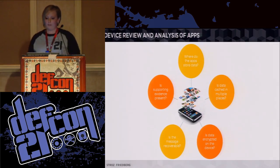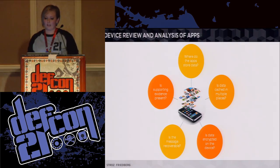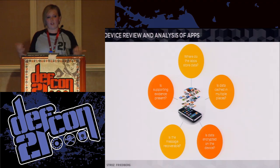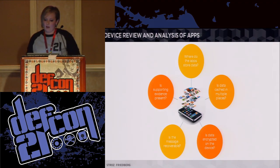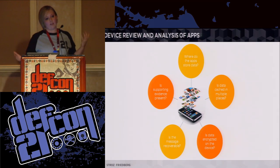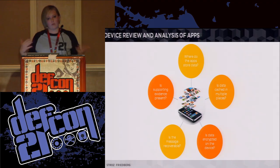The questions we want to ask: Where are the app store data? We'll talk about the user plist on an iPhone. Is data cached in multiple places? We're going to talk about metadata and then the data itself on Android. Is data encrypted? We'll talk about the differences between apps like Wickr and Snapchat and their intentions. Are the messages recoverable? We're going to show you that in some cases, yes, they are. Is there supporting evidence present? We'll talk about empty files that show there was an image present at one point, and the evidence we can use to tie back to metadata and show conversations happened, when they happened, and kind of what happened.